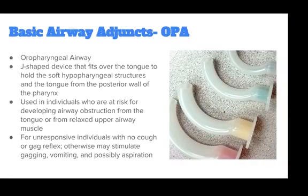OPA stands for oral pharyngeal airway. It is a J-shaped device that fits over the tongue to hold the soft pharyngeal structures and tongue away from the posterior wall of the pharynx. An OPA is used in individuals at risk for airway obstruction from the tongue or relaxed upper airway muscles. It is meant for unresponsive individuals who have no cough or gag reflex. If used in someone who has these reflexes, it may cause gagging, vomiting, and possibly aspiration.